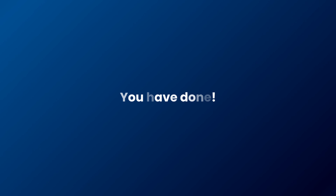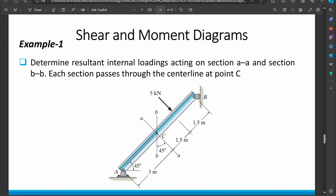These are the basic things you should know. Let's go to the question. We have to find the resultant internal loadings acting on section AA and section BB.